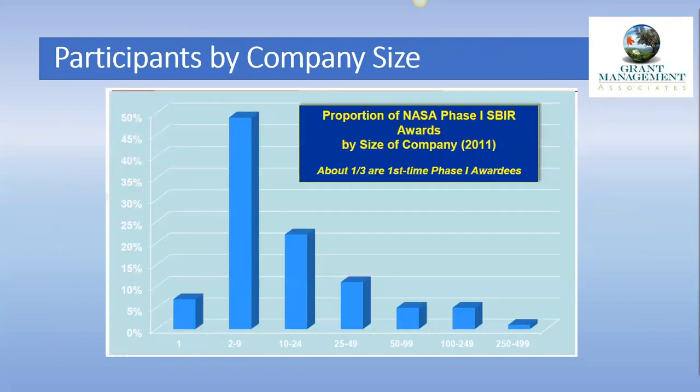Looking at typical participants by company size: the 2–9 employee group is by far the largest category of recipients, receiving almost 50% of the awards. The next biggest group is 10–24 employees, and they get smaller from there. A fair number of awards are given to individuals — for example, grad students coming out of graduate school apply for SBIR and are often successful.